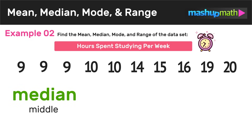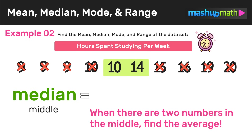Moving on, let's go ahead and find the median or middle of this data set. Just like in the last example, we can start crossing out numbers from left to right as we narrow in on the middle value. Now in this example, since the data set has an even number of values — there are 10 total values — there will be two numbers in the middle, in this case 10 and 14. Whenever this happens, you just have to find the average of those two numbers: 10 plus 14 equals 24, and then dividing by 2 gives us 12. So we can conclude that the median of this data set is 12.